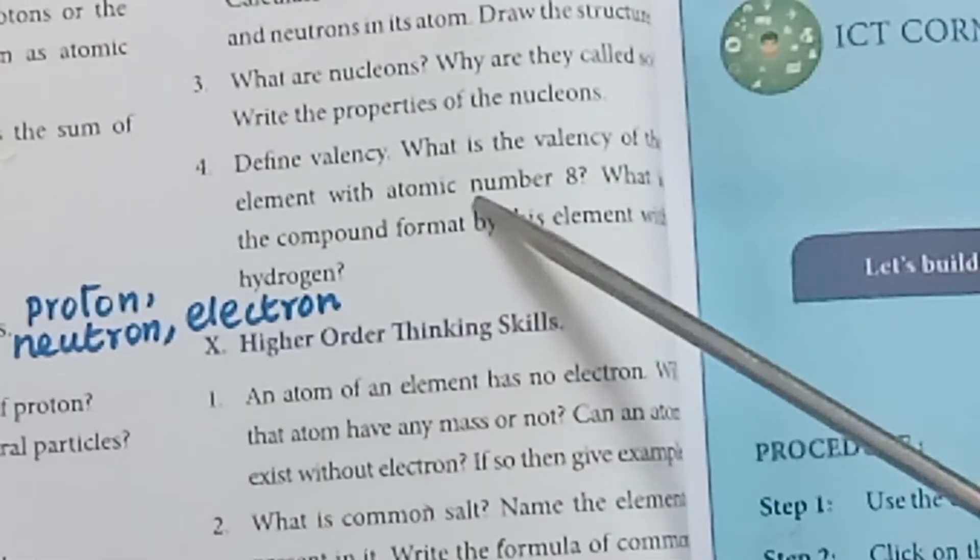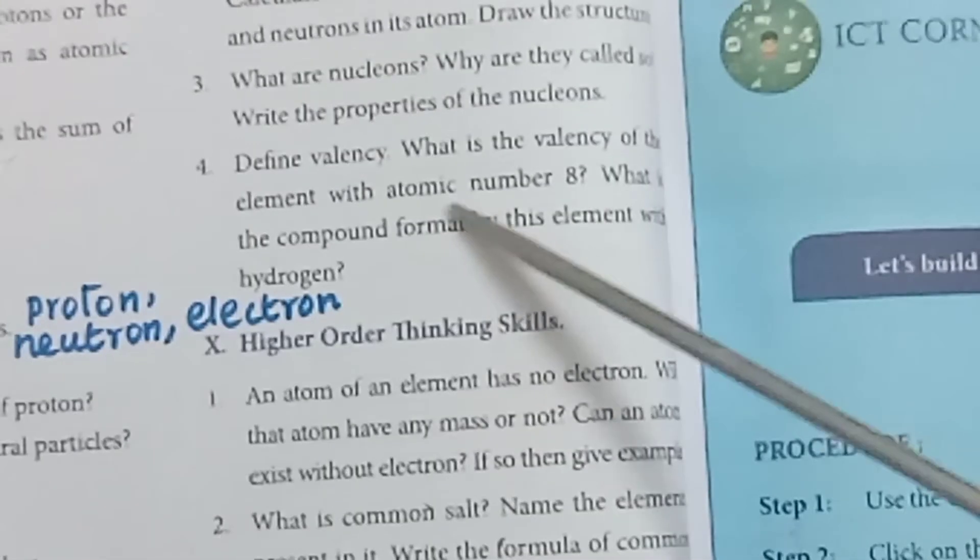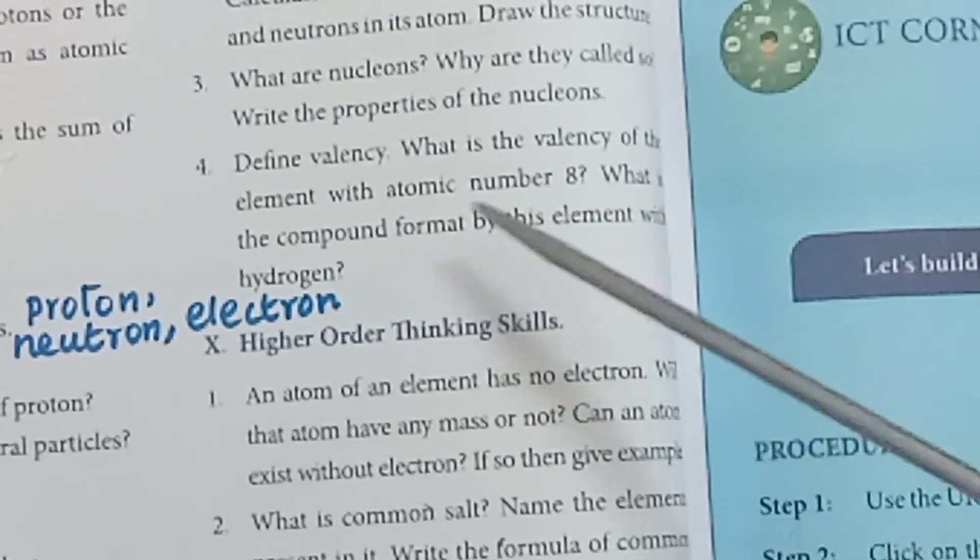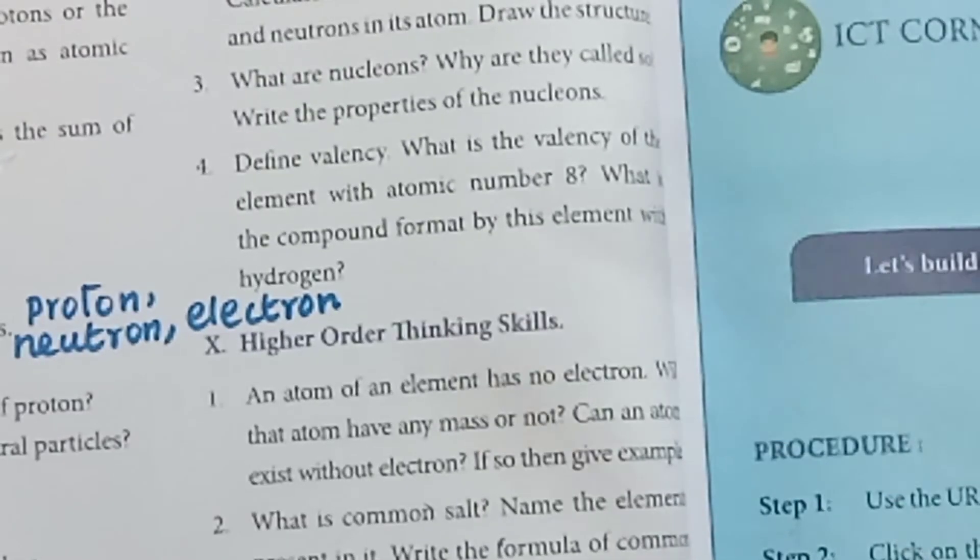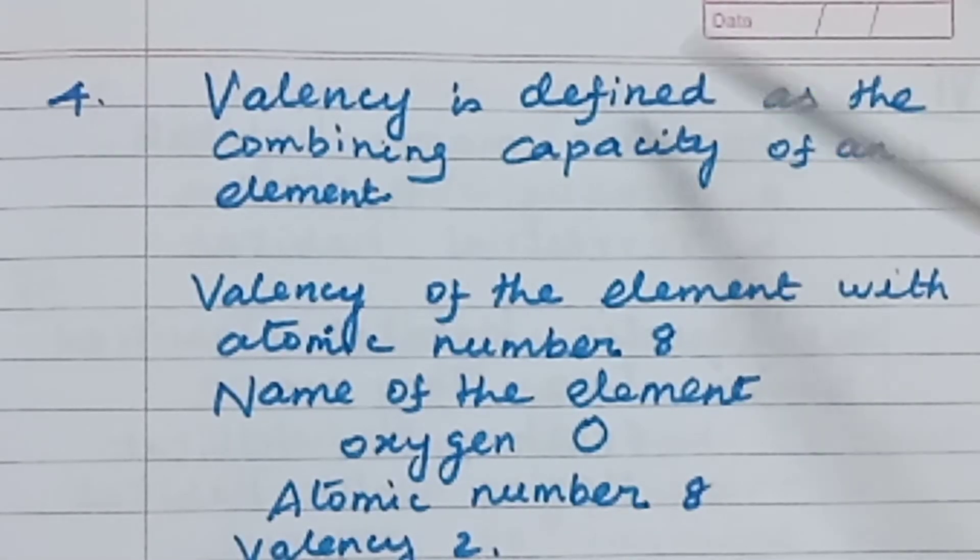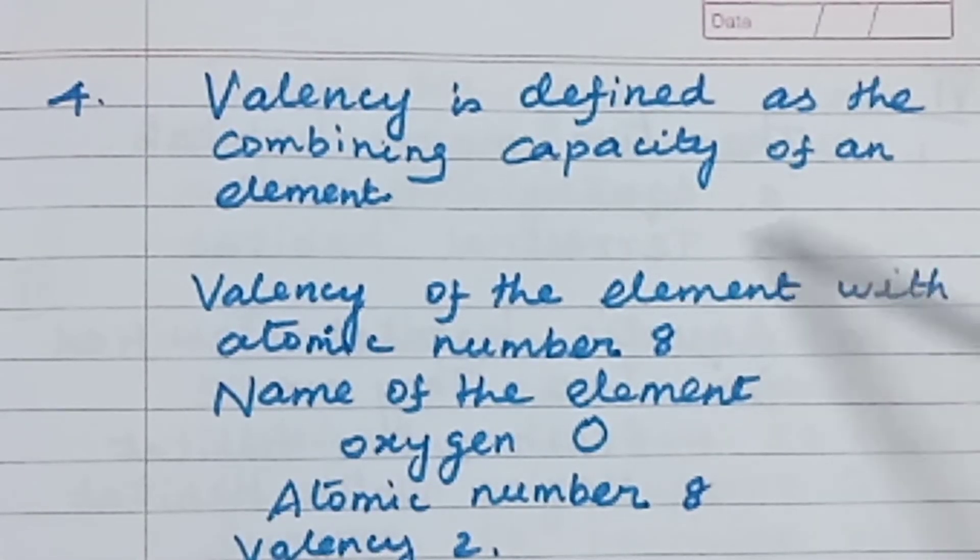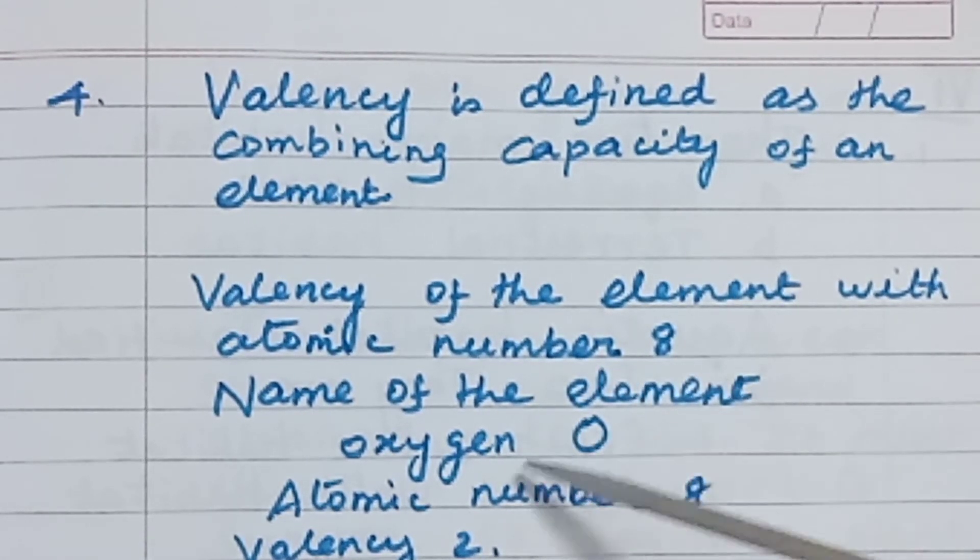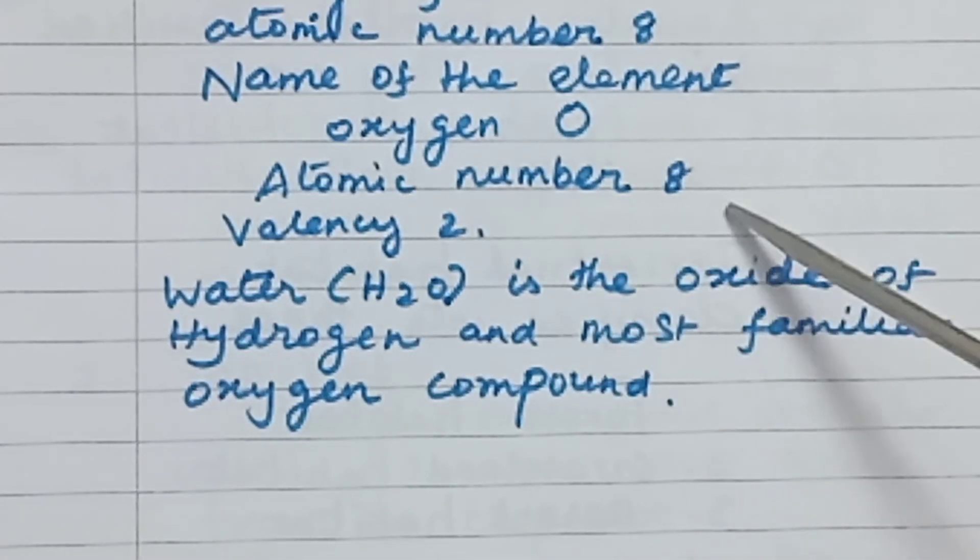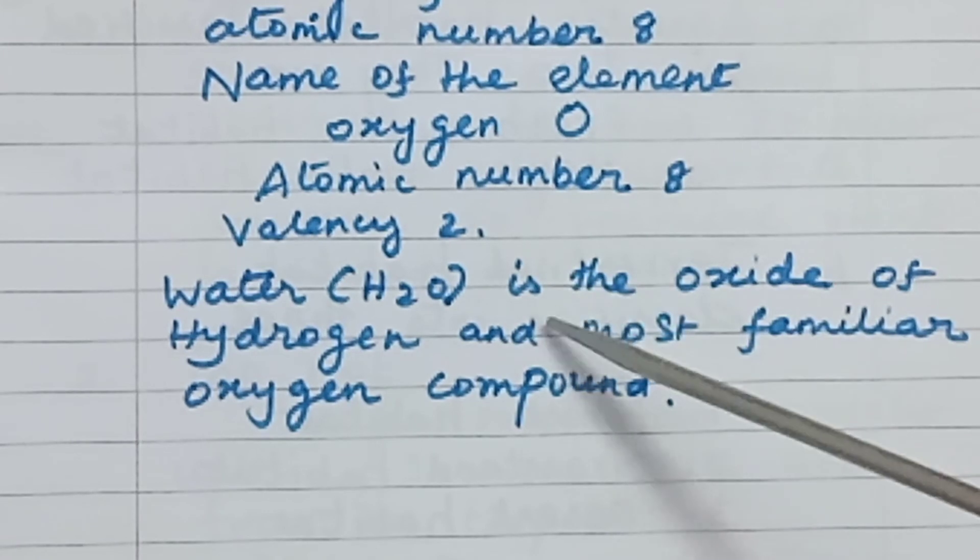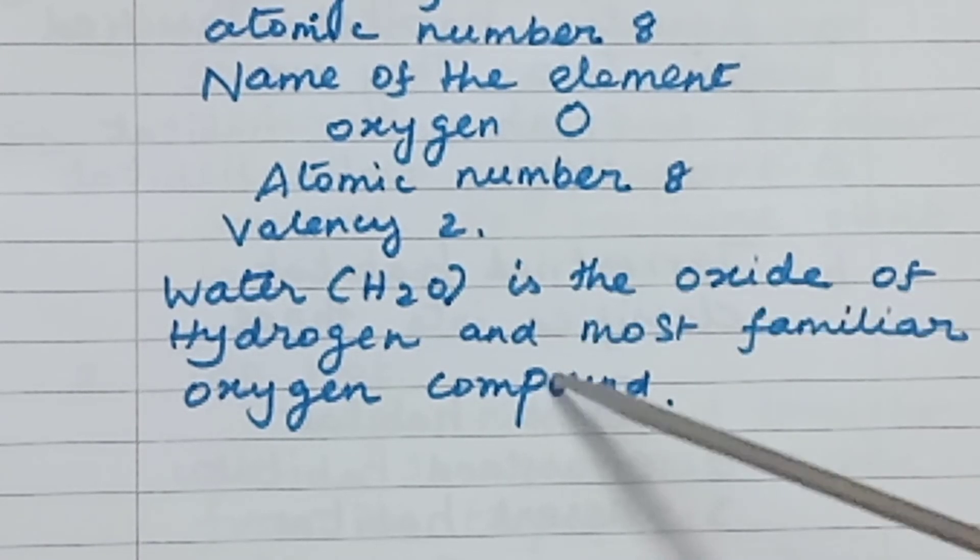Fourth question: Define valency. What is the valency of the element with atomic number 8? What is the compound formed by this element with hydrogen? Valency is defined as the combining capacity of an element. Valency of the element with atomic number 8: name of the element is oxygen, symbol O, atomic number 8, valency 2. Water H2O is the oxide of hydrogen and most familiar oxygen compound.